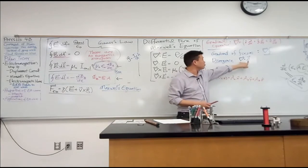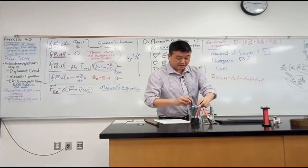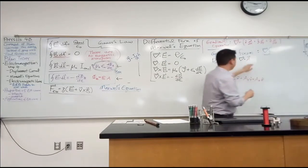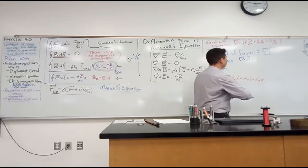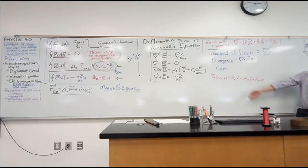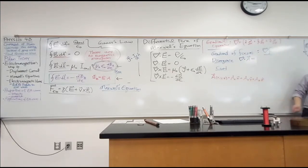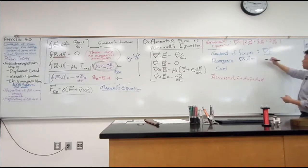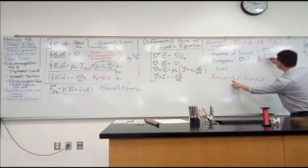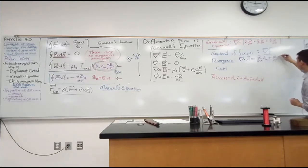Divergence looks like a dot product between two vectors. When you write it out in Cartesian coordinates, you get nine products, but only three survive — x dot x, y dot y, and z dot z. So it becomes: the x-derivative of Ax, plus the y-derivative of Ay, plus the z-derivative of Az.